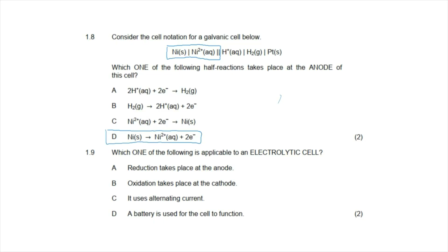Question 1.9: which one of the following is applicable to an electrolytic cell? The correct answer is D — a battery is used for the cell to function. Option A is incorrect because reduction takes place at the cathode, not the anode.